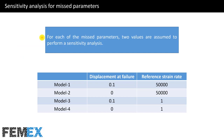Now I want to talk about sensitivity analysis for the missing parameters. For each missing parameter, two values are assumed. I have assumed displacement at failure values of 0.1 and 0, and reference strain rate values of 50,000 and 1. By combining these four values, we will have four models, all of which I have defined, simulated, and will compare their results.